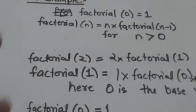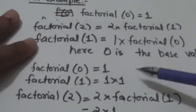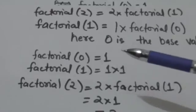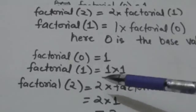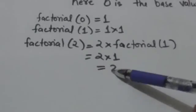Here 0 is base value, so factorial(0) is equal to 1. So factorial(1) will become 1 into 1, and factorial(2) will become 2 into 1, that is 2.